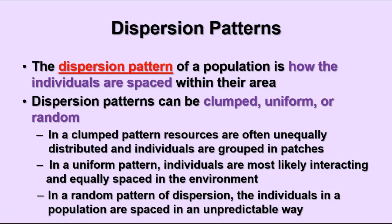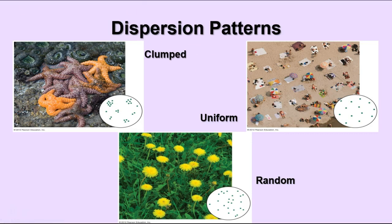In a uniform pattern, individuals within the population are pretty evenly distributed, having about the same distance between each other — pretty widely spread. In a random pattern, there's no predictable way to predict how they'll be arranged. We see sea stars in a clumped pattern, grouped where food is located or conditions are good. In a uniform distribution, like people on a beach, they end up spaced relatively evenly in the available space. In a random pattern, like wildflowers, it just depends on where the seeds end up as to where the plants will grow.